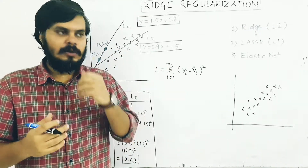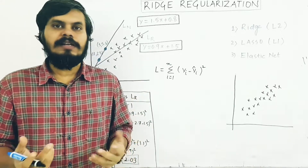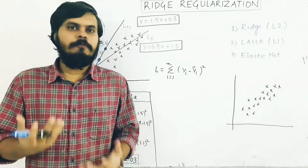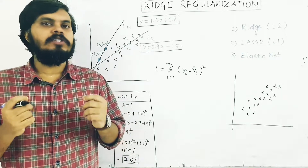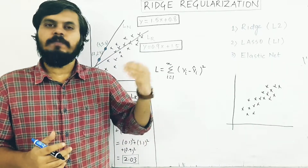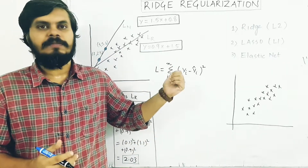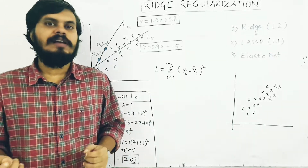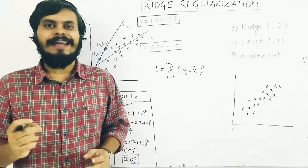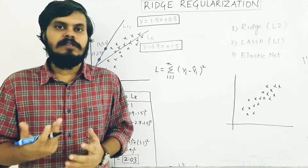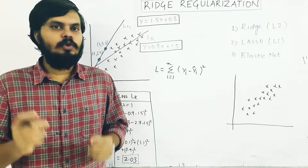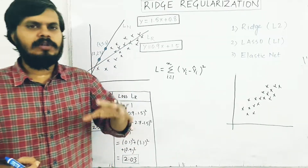Clearly you have to use regularization wherever you feel there is a chance of overfitting. We also discussed bias-variance trade-off — if you want to reduce overfitting in your machine learning model, there are three techniques: bagging, boosting, and regularization. It's a very important concept especially when dealing with linear regression as well as logistic regression, and many engineers use it by default, so you should totally learn it.